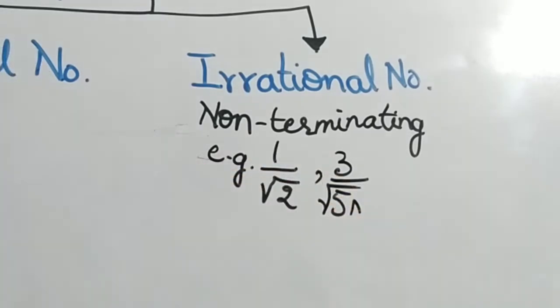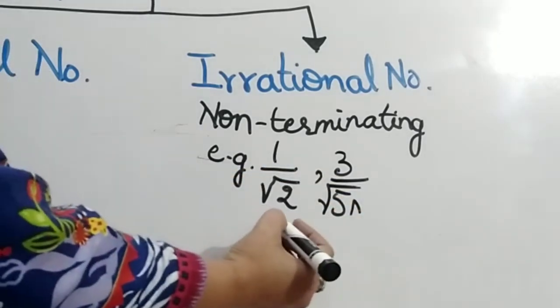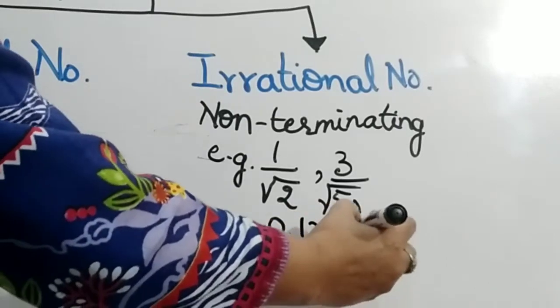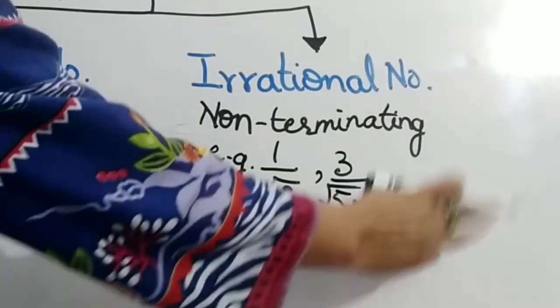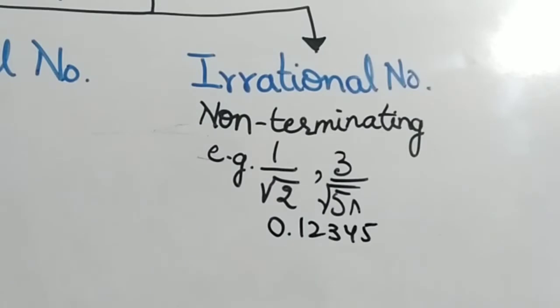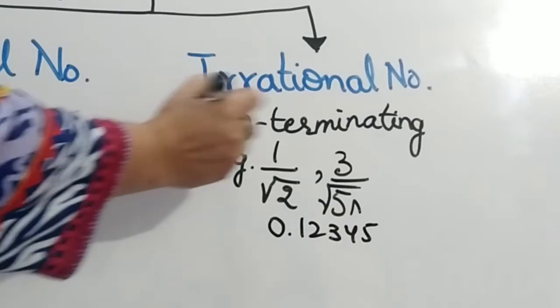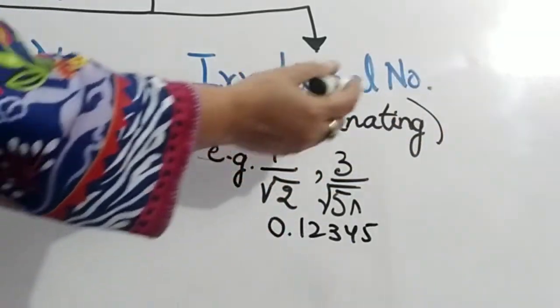When you divide these numbers, your answer will come and so on. These numbers never terminate. These kinds of numbers are called irrational numbers.